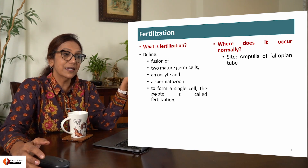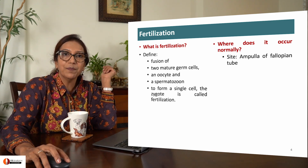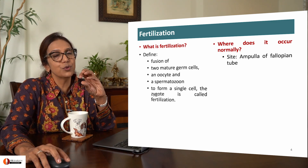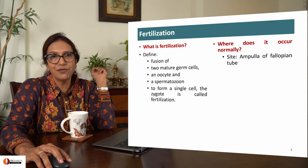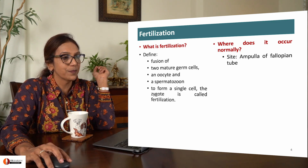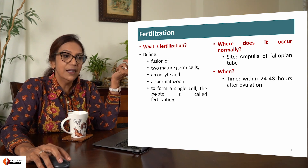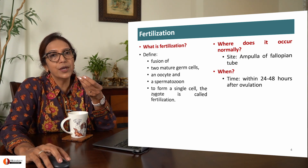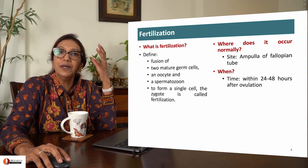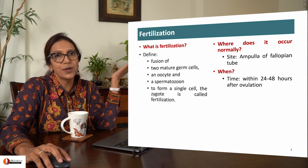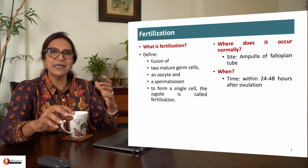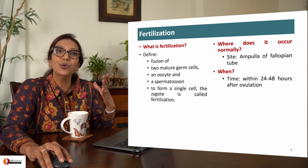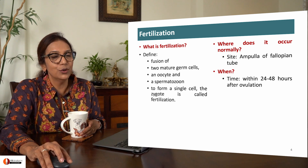Where does it occur normally? The site for fertilization normally should be the ampullar fallopian tube. And when does it occur? It occurs about 24 to 48 hours from the ovulation. So these are some basics of fertilization to bring you into the topic.